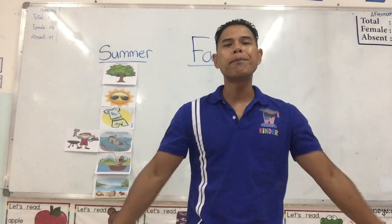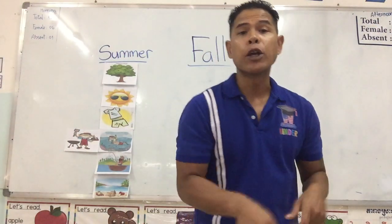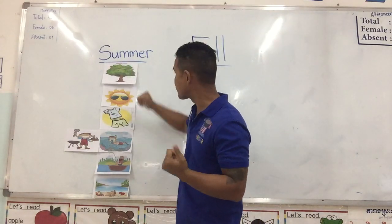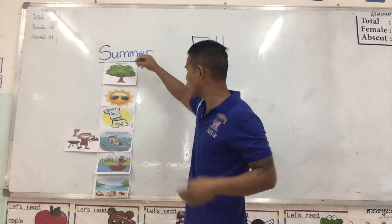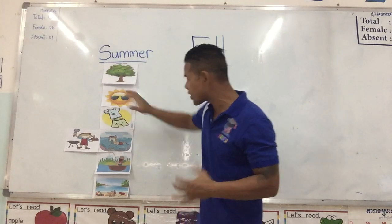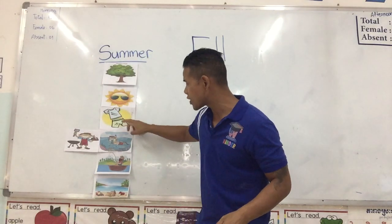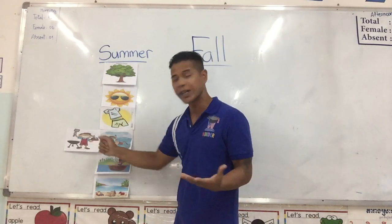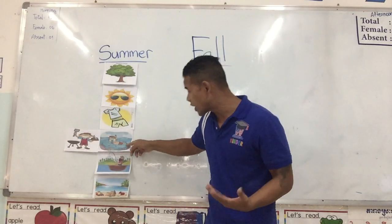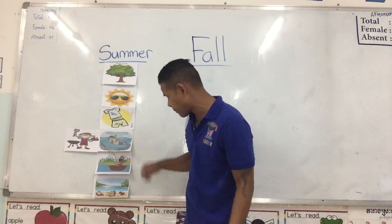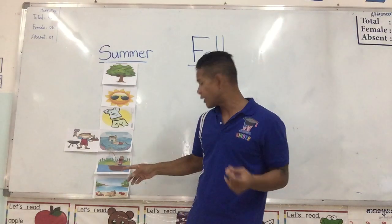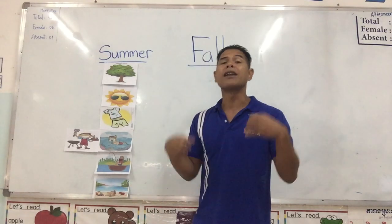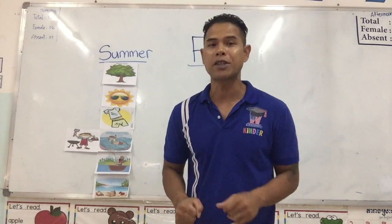Good morning class, welcome back. Yesterday we were learning about summertime. Right here, this is summertime. Look at it — the trees are green with a lot of fruits on them. The sun is out. We wear t-shirts and shorts. The guy is cooking outside for his family; he's grilling. This little kid is going snorkeling at the beach. This guy is fishing outside on the lake. We go play on the beach, play in the sand. All of those things we do in the summertime.